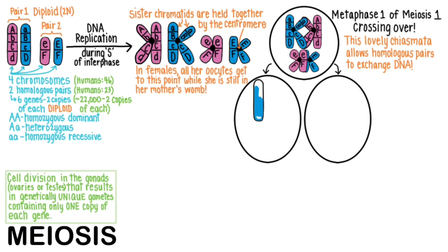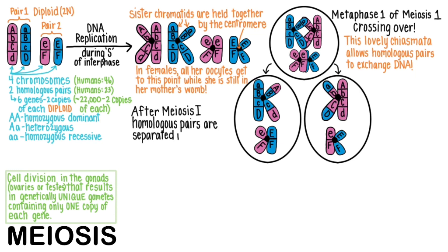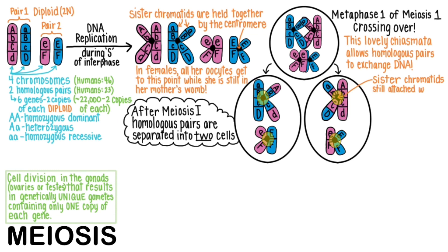During anaphase 1 and telophase 1, the homologous chromosomes are pulled apart by spindle fibers into opposite sides of the cell — I didn't draw the spindle fibers though. Then cytokinesis occurs. So after meiosis 1, homologous pairs are separated into two cells. Sister chromatids are still attached with the centromere, and notice that they are no longer identical after crossing over before the division occurred.